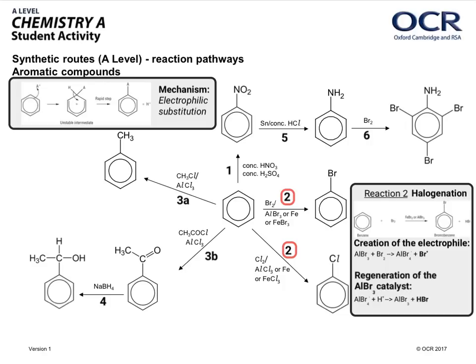The second aromatic reaction — whether it's bromination or chlorination — proceeds by exactly the same mechanism, so I haven't put the mechanism up this time; refer to the top left of the screen. The creation of the electrophile and the regeneration of the AlBr₃ catalyst are shown. The electrophile is a positively charged bromine ion — Br⁺ — not a bromine atom or a bromide ion. In the regeneration of AlBr₃, HBr comes off at the end; a lot of people forget this.